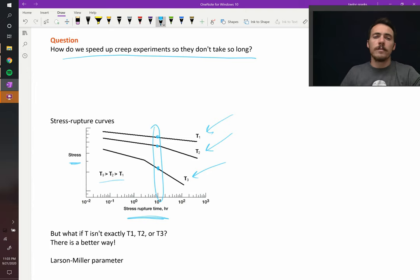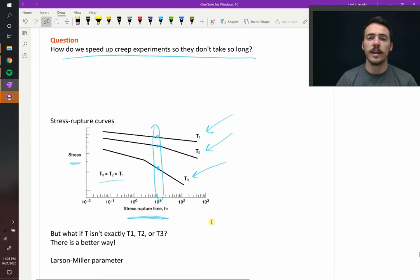So you can see that if you don't want to wait hundreds or thousands or millions of hours, one thing you could consider is running your experiments at increasingly high temperatures, since we know creep is a thermally activated process. We can just do these at higher temperatures, and that allows us to do accelerated testing.